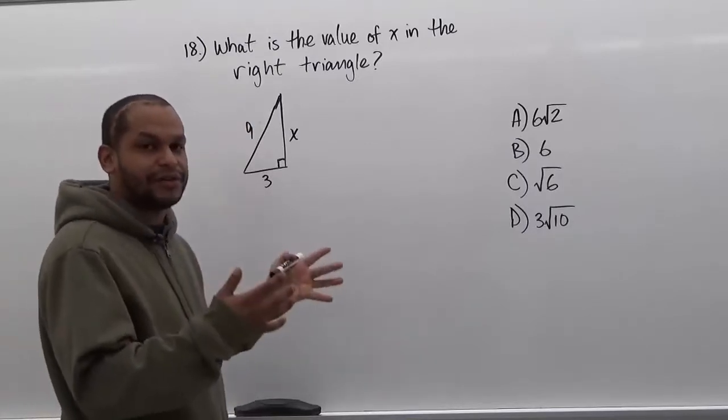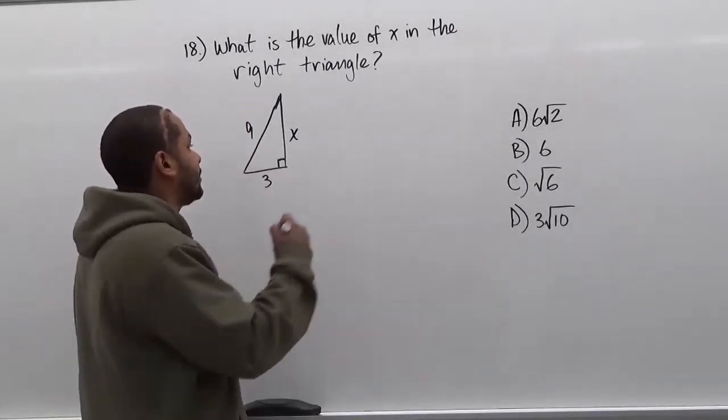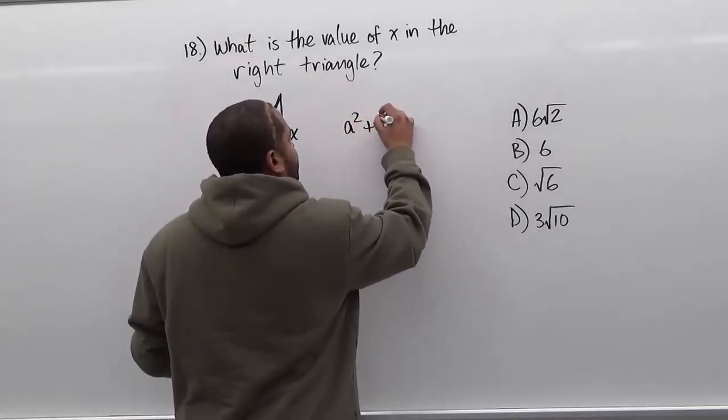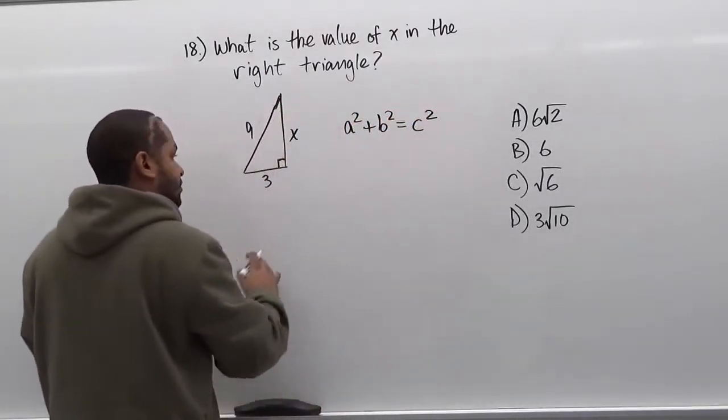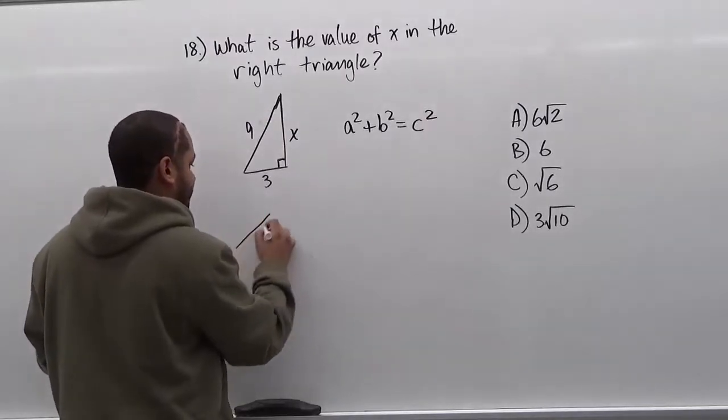To solve this kind of problem, we're going to use the Pythagorean theorem. So we have a² + b² = c². What I'm going to do here is draw a diagram to explain how the Pythagorean theorem works.